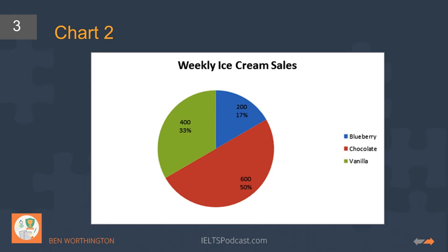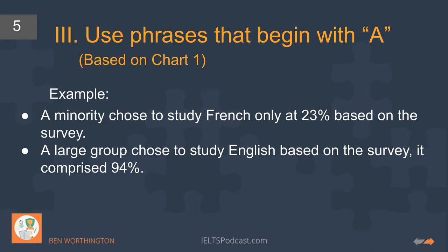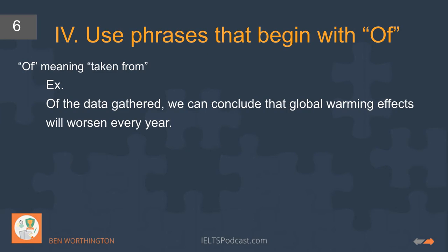Another way is to start with a phrase beginning with 'a': 'A minority choose to study French only, at 23%, based on the survey' or 'A large group choose to study English, based on the survey, comprising 94%.' So we describe a section or chunk of the data this way.